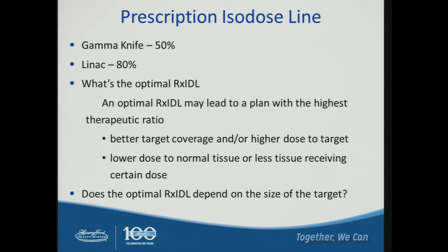As a physicist, our question is: should we also consider optimizing the prescription isodose line depending on lesion size? Gamma Knife has been historically prescribed at 50% and LINAC probably 80–90%. The question for us is what is really the optimal isodose line — one that leads to the highest therapeutic ratio with better target coverage and lower dose to normal tissue. This is about personalized treatment.